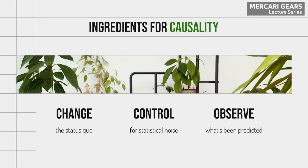So how do we get from correlation to causation? That is actually something we can just steal from science. There are three main ingredients for causality: we need to change the status quo, we need to control for statistical noise, and then we need to observe what we have actually predicted.